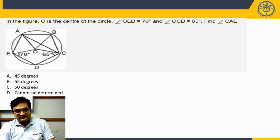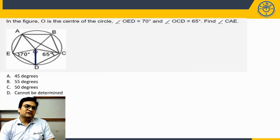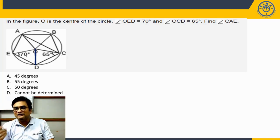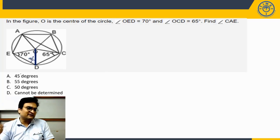If I connect O with D, when you connect O with D, can I say triangle OED is going to be an isosceles triangle? Yes, because OE is radius, OD is also radius. In an isosceles triangle, angles opposite to equal sides will be equal. So if this is 70, this is also going to be 70.